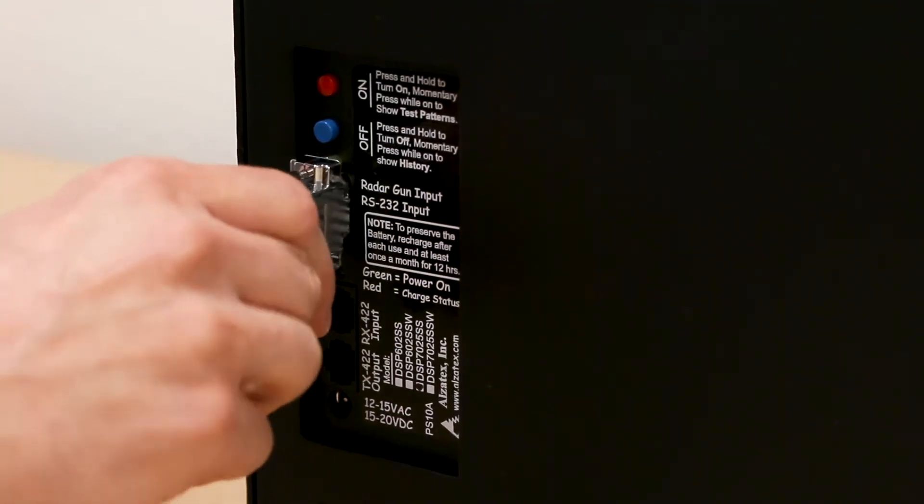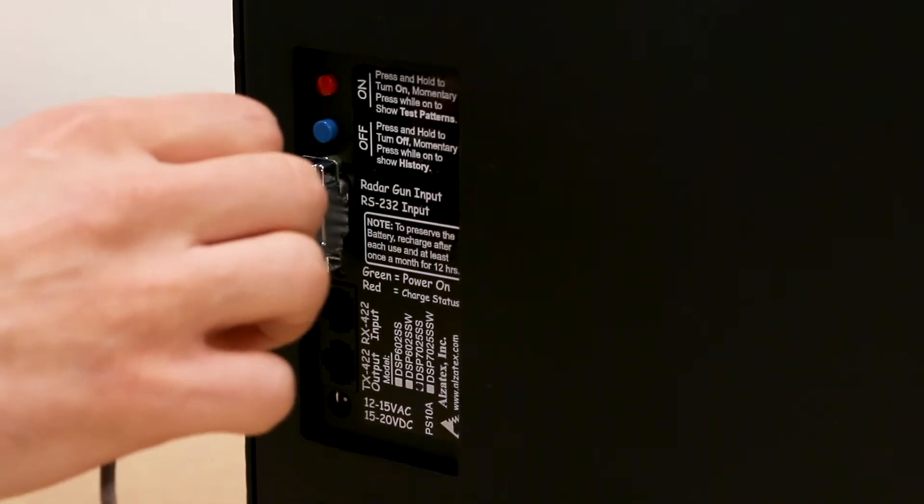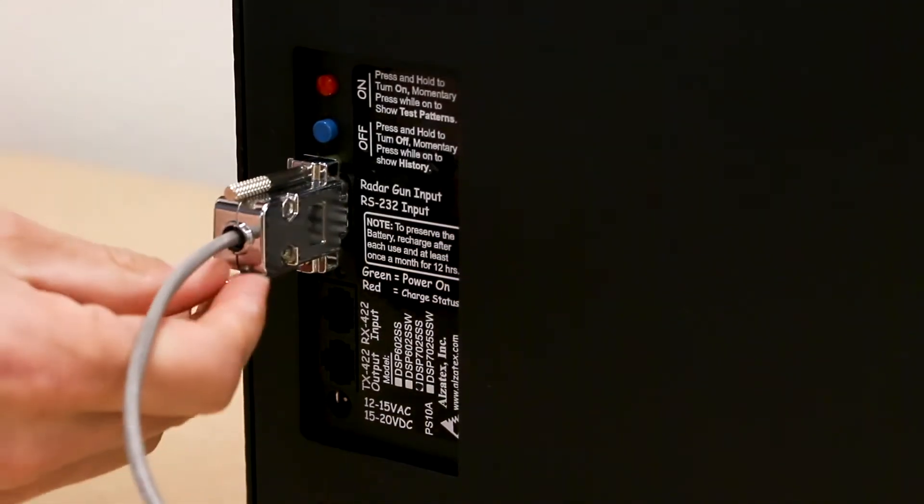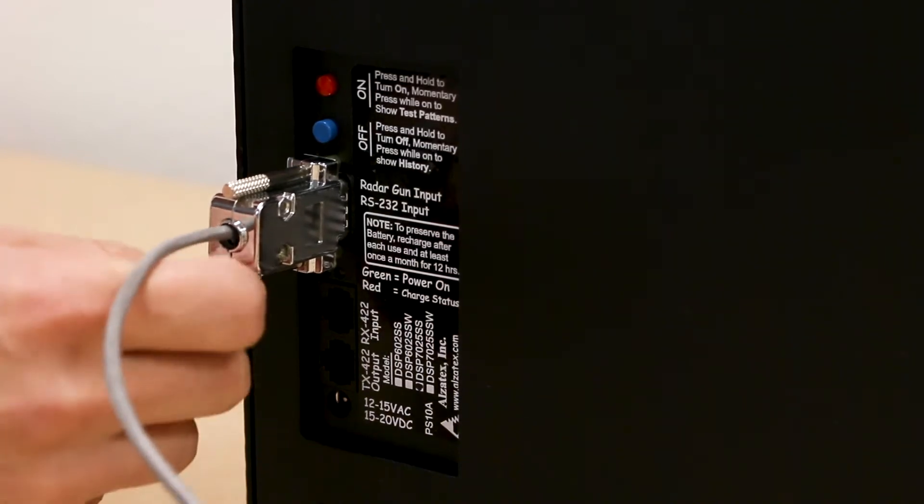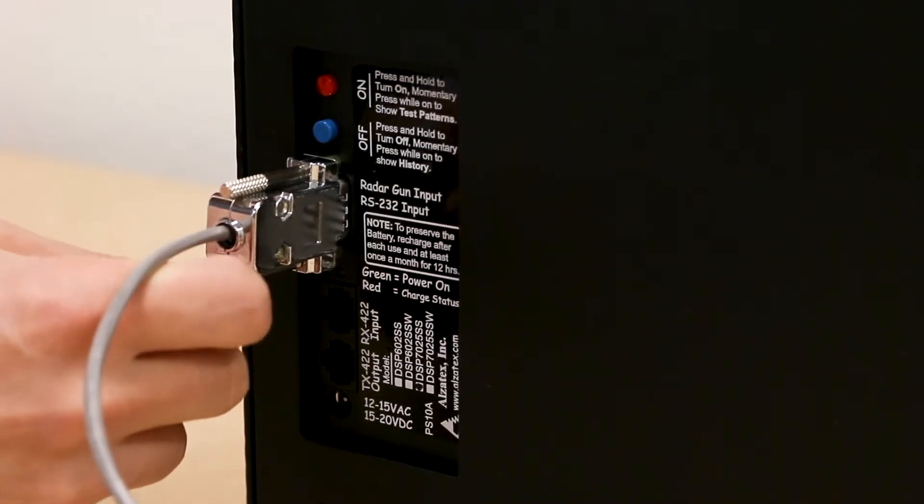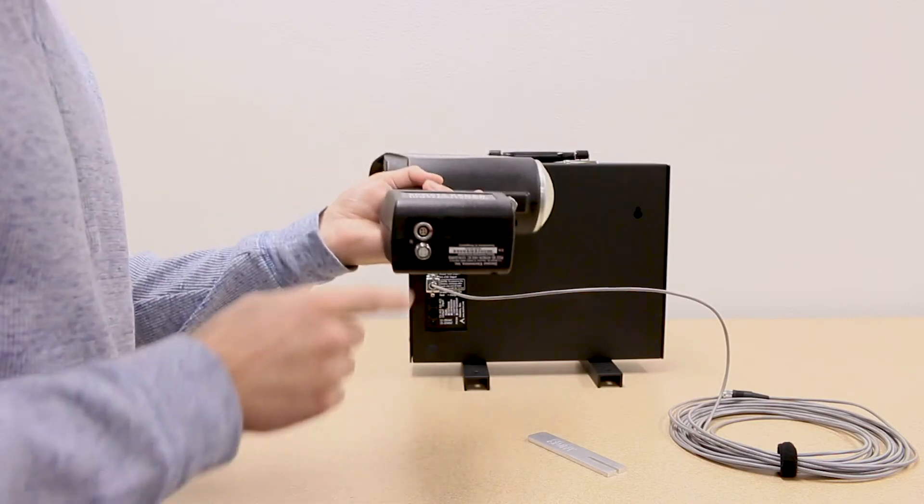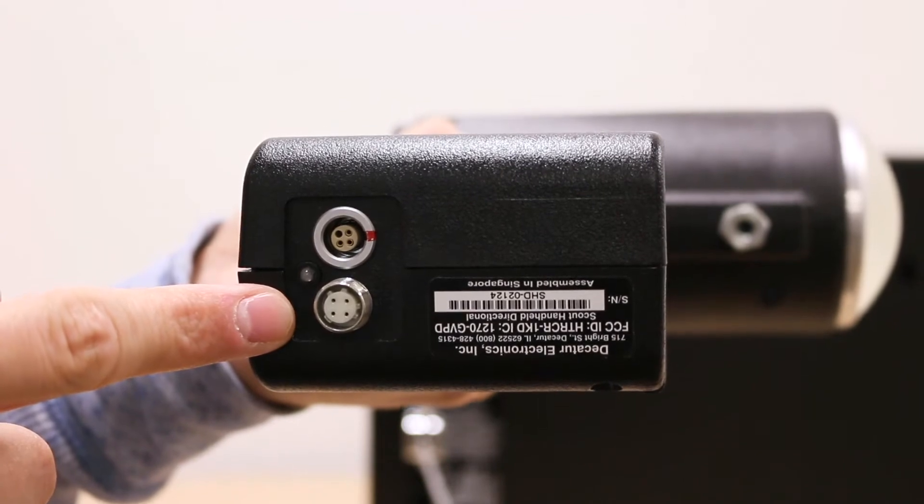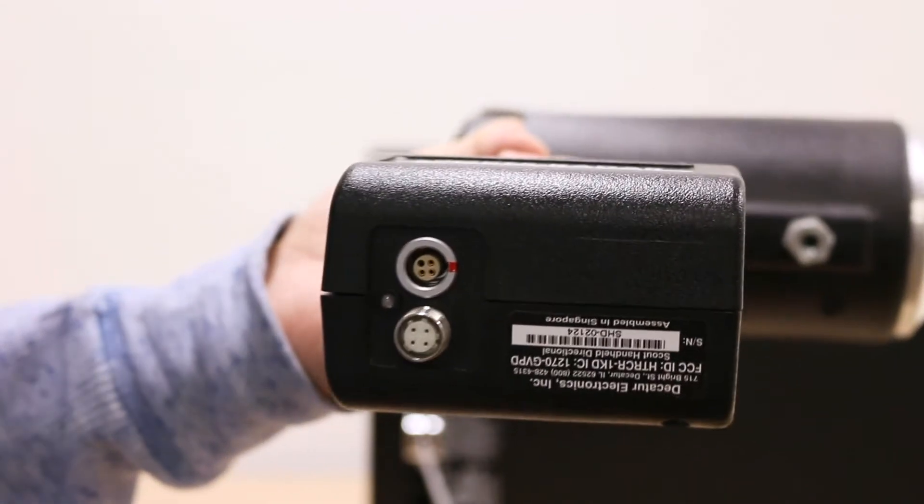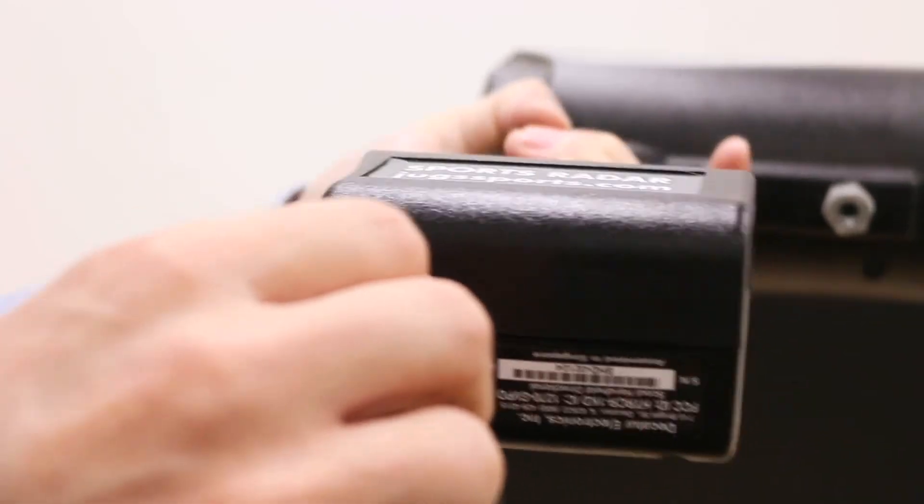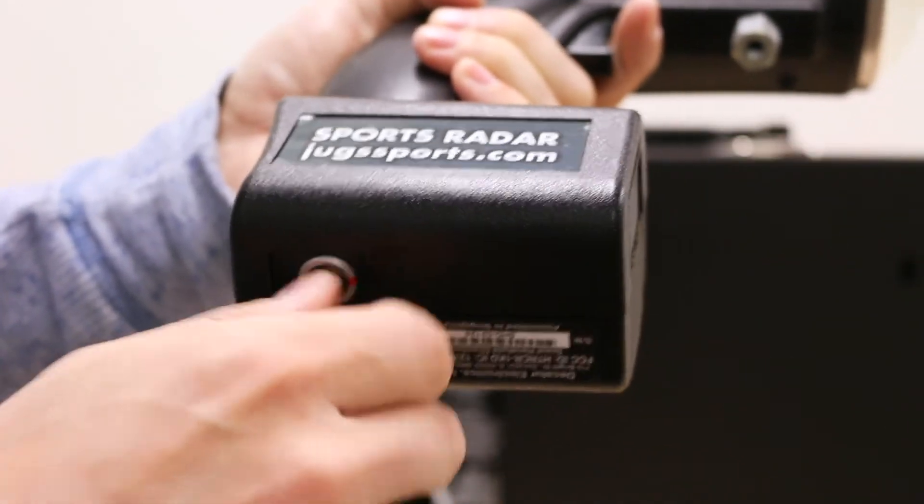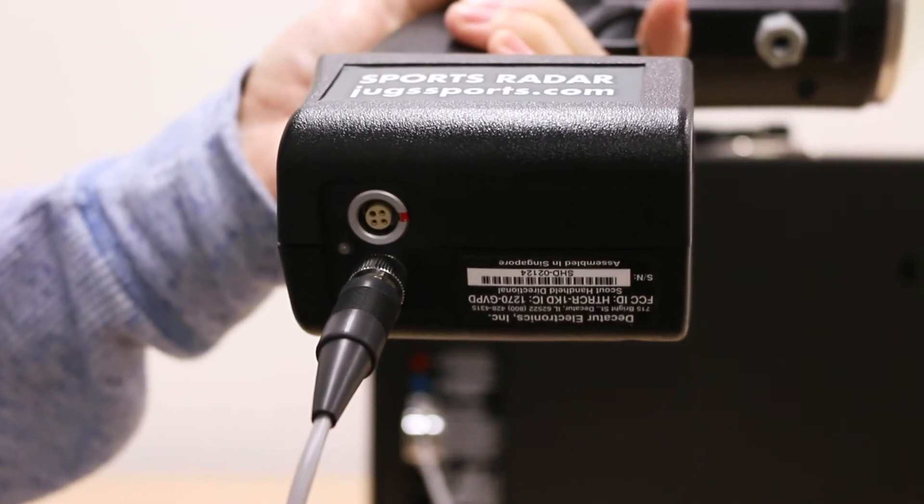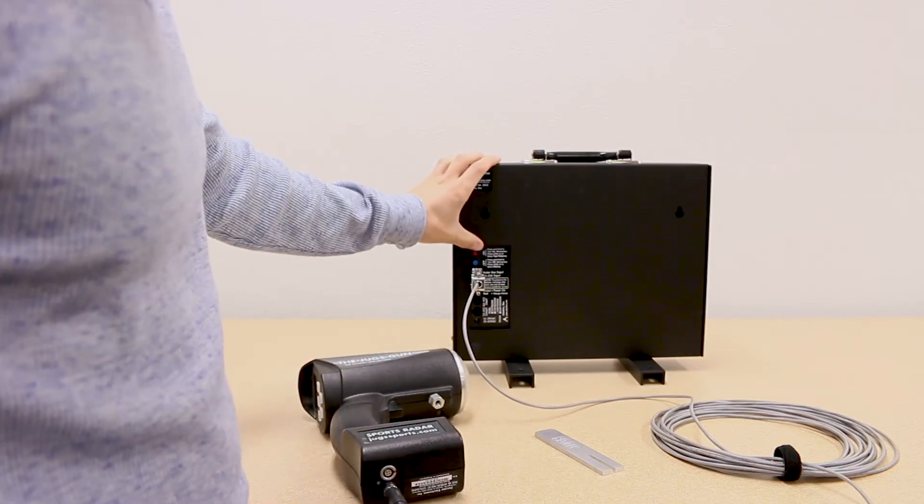Now we're going to connect the connector and tighten two thumb screws. There are two connectors here - one is for power and the other is for data. Plug this in. Plug this in.